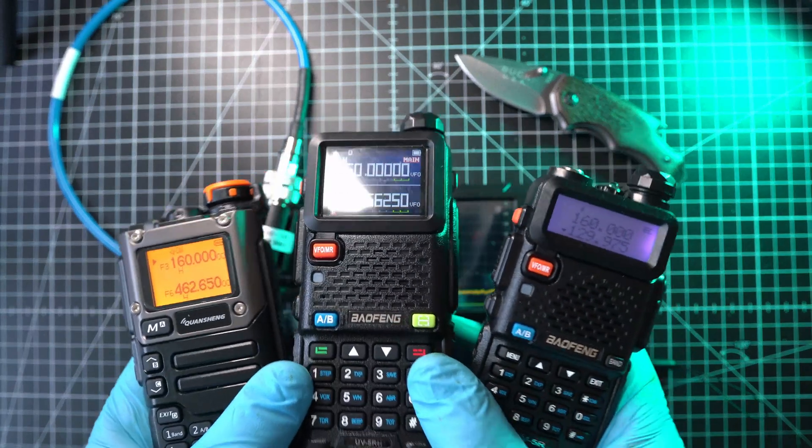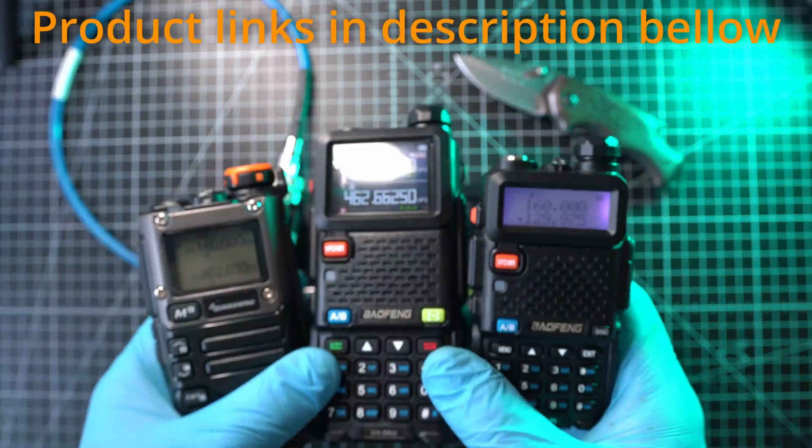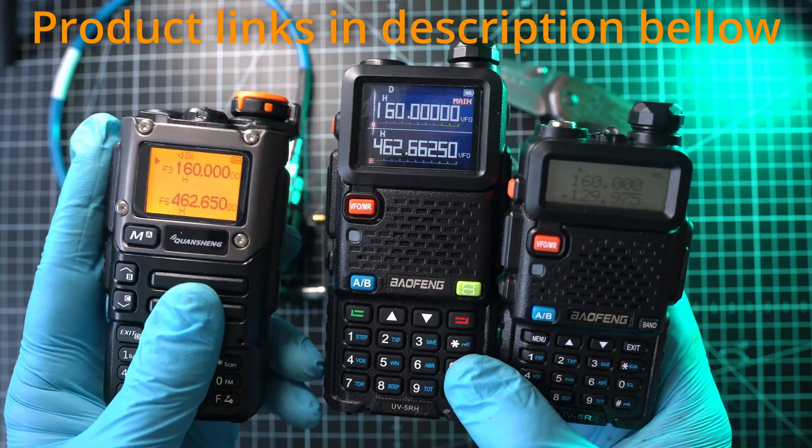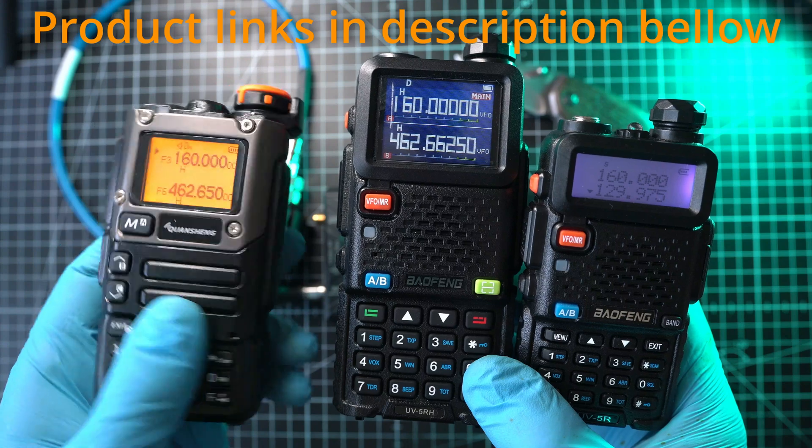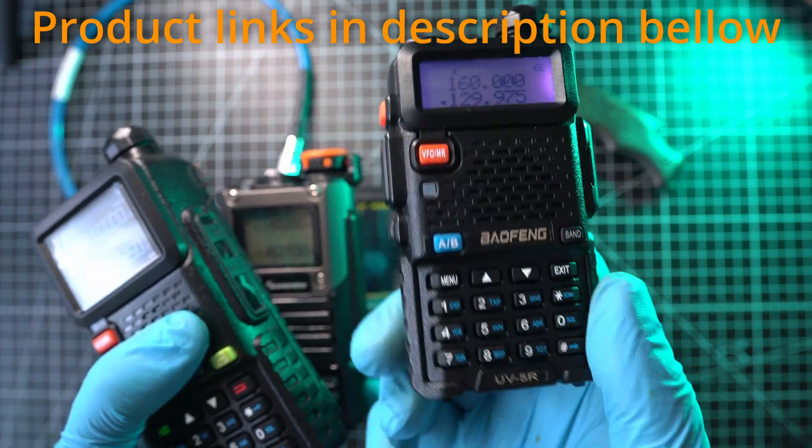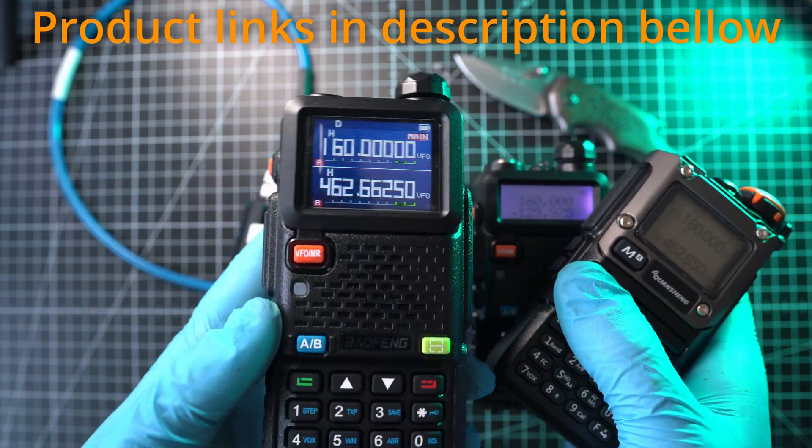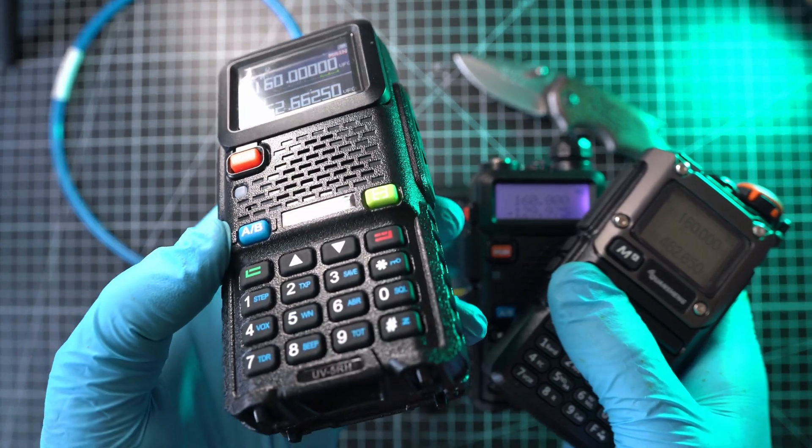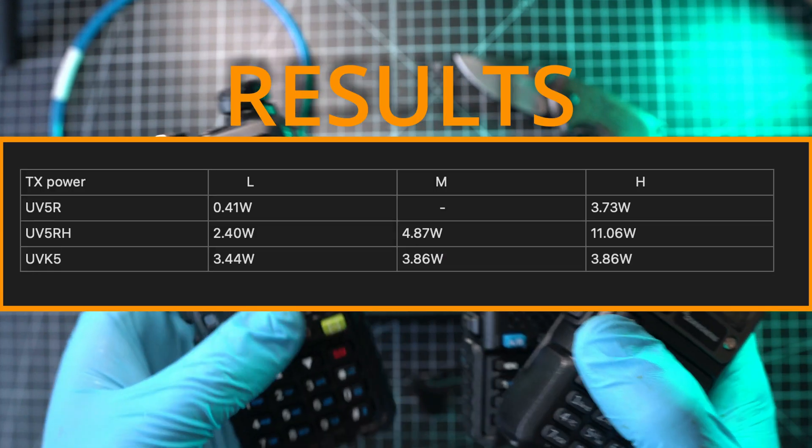Welcome back to Take Apart. Today I'll check transmitting power of these three popular dirty radios. Here on left, Quansheng UVK5, probably the most gangster of these. Next, Baofeng UV5R, the 2024 version with airband. And this Baofeng UV5RH should have 10 watts, but does it? Check the results.